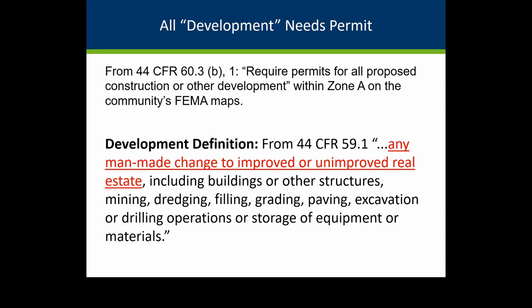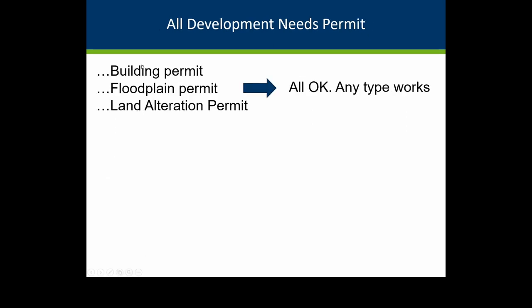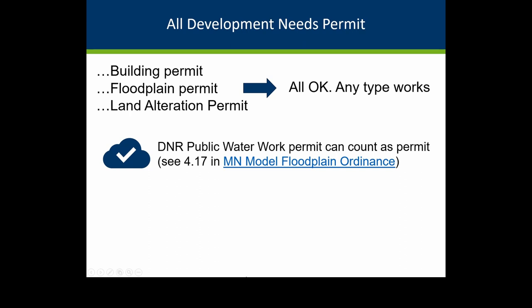FEMA has a very broad definition of development: of course buildings, but also culverts, bridges, paving, excavation, grading, dredging, filling, and storage of materials or equipment — all considered development requiring some kind of permit. What kind of permit depends on your situation. If you have building code and it's a building, your building permit works. Otherwise you may use a land alteration permit, zoning permit, or floodplain permit. Our model ordinance notes that if there's a DNR public waters work permit covering the same project, that permit can be used and the city or county doesn't have to issue a separate permit.